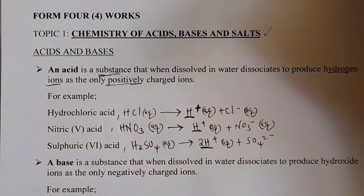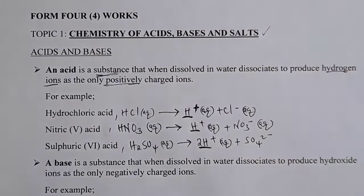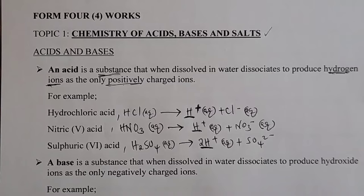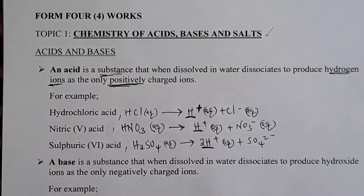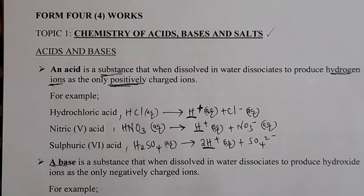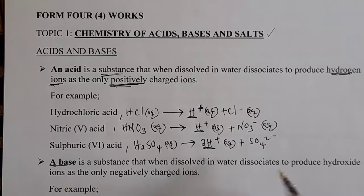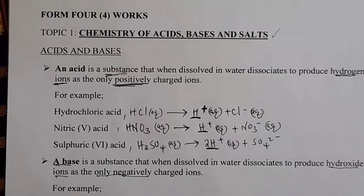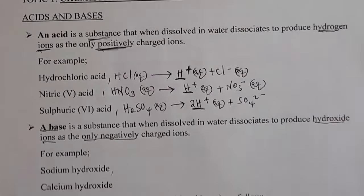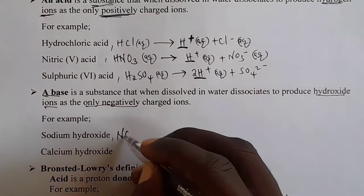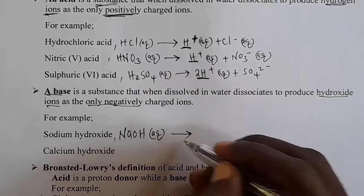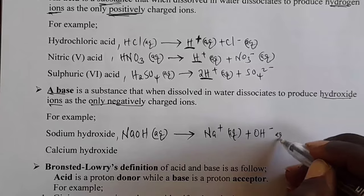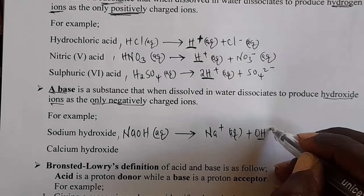Now let's go to a base. If you know how to define an acid, you also know how to define a base — you only replace hydrogen ions with hydroxide ions, and positively charged ions with negatively charged ions. A base is a substance that when dissolved in water dissociates to produce hydroxide ions as the only negatively charged ions. For example, sodium hydroxide (NaOH) dissolves in water dissociating to produce sodium ions and hydroxide ions.